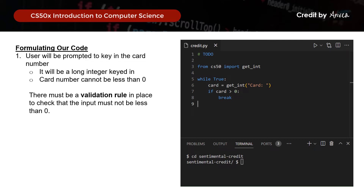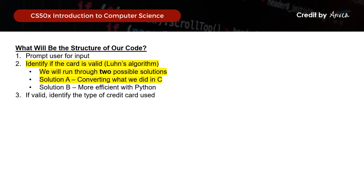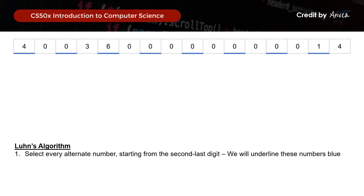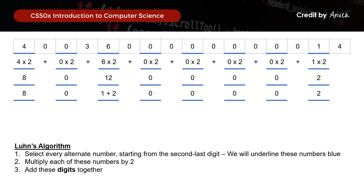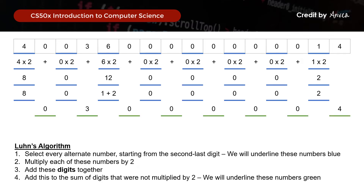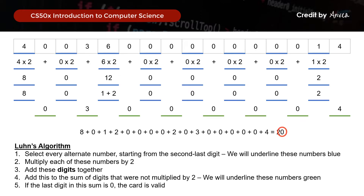Moving on, we'll apply Luhn's algorithm to find out if the card number is valid. As a recap, for Luhn's algorithm, we will first select every alternate number starting from the second last digit. Then we multiply these digits by 2 and add these digits together. Then we add this to the sum of digits not multiplied by 2. And if the last digit of this total sum is 0, the card is valid.